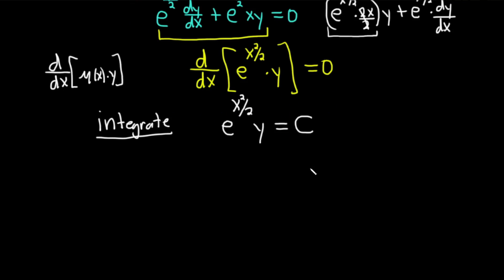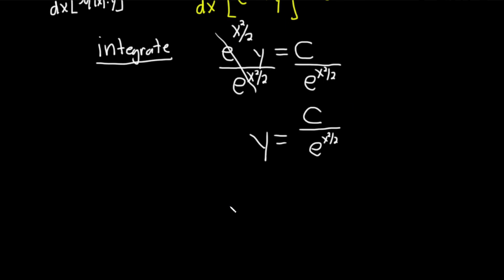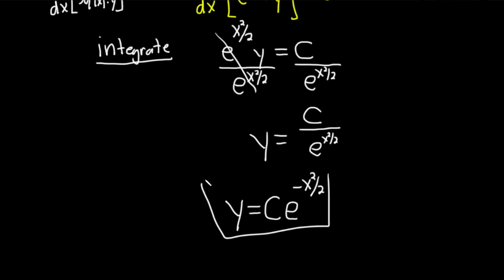So we just have to solve for y now. We can simply divide both sides by e to the x squared over two. So y equals c over e to the x squared over two. I'm going to bring it upstairs to make the exponent negative so it looks better: y equals c times e to the negative x squared over two. That would be the solution to this differential equation. Very powerful technique. Let's go ahead and do another example.